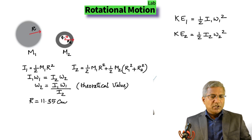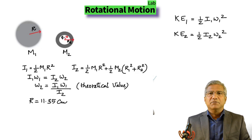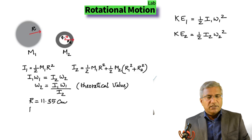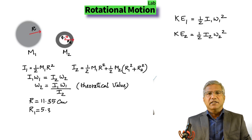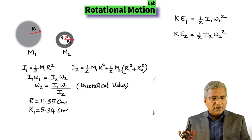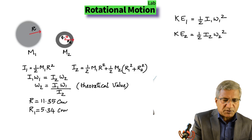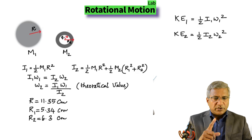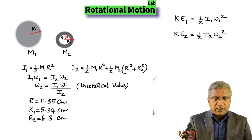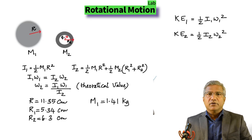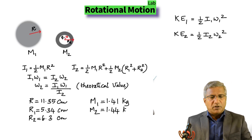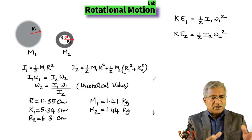Here are the numbers measured in the lab. The radius of the disk is 11.35 centimeters — convert it to meters. The radii of the ring: R1 is 5.34 centimeters, that's the inner radius; R2 is 6.3 centimeters, that's the outer radius. The masses are also given: M1 is 1.41 kilograms, the mass of the disk; M2 is 1.44 kilograms, the mass of the ring. Those are the values that you need.